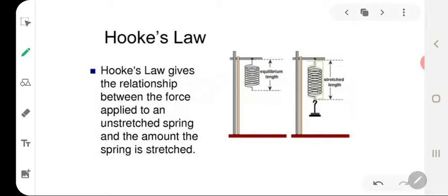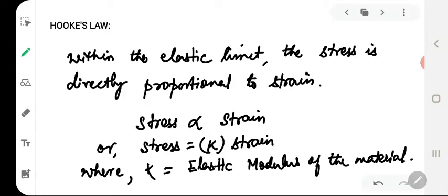We had introduced the concept of Hooke's law and I told you that Robert Hooke found that within the elastic limit the stress is directly proportional to strain. So we have stress proportional to strain or stress is equal to k times strain where k is the constant of proportionality called elastic modulus of the material.